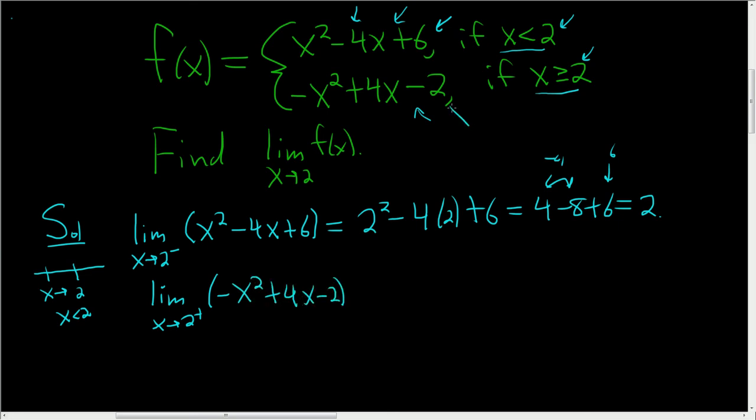We're using this piece here because x is bigger than 2. At this point, we can just plug in 2, so we get -4 + 8 - 2. So -4 + 8 is 4, minus 2 equals 2.